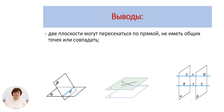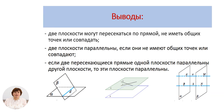Итак, обобщим. Две плоскости могут пересекаться по прямой, не иметь общих точек или совпадать. Две плоскости параллельны, если они не имеют общих точек или совпадают. Если две пересекающиеся прямые одной плоскости параллельны другой плоскости, то эти плоскости параллельны. На этом мы заканчиваем наш третий урок. Я надеюсь на встречу на последнем уроке, где мы будем изучать приложения параллельности в разных областях человеческой деятельности. До свидания.